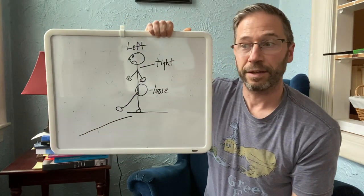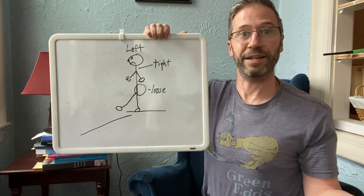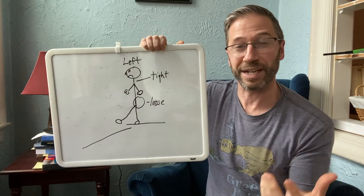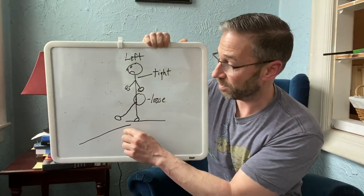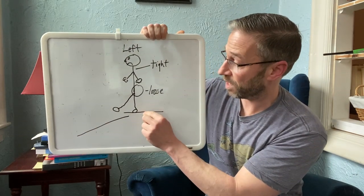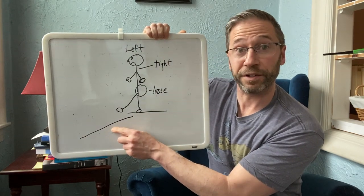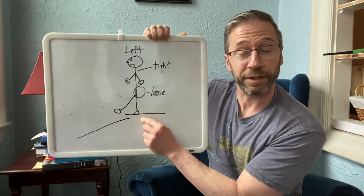So every time I take a step, my brain perceives the ground as moving down and away from me. So is it any wonder that I stayed extended? So I stayed arched as a protective mechanism. My brain's perception of the ground was this. My brain's perception of the ground on the right was this.